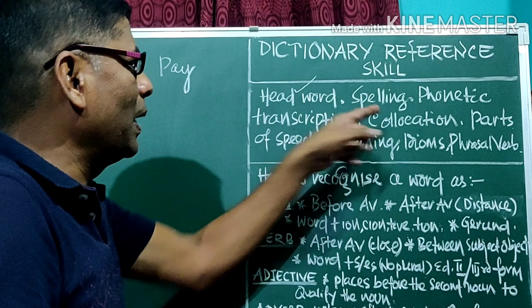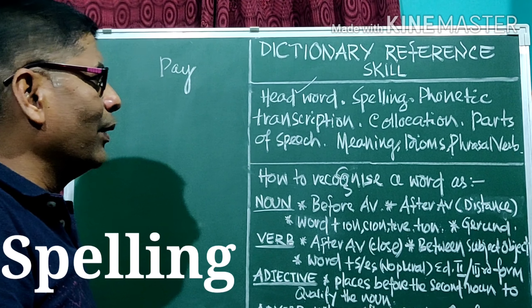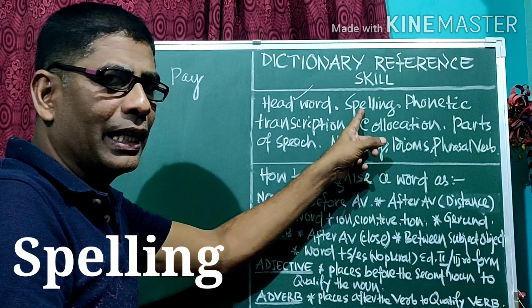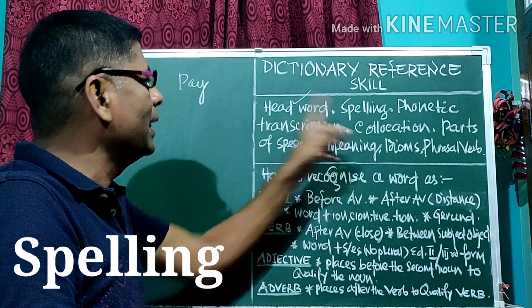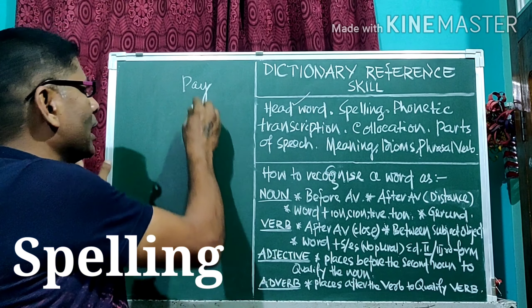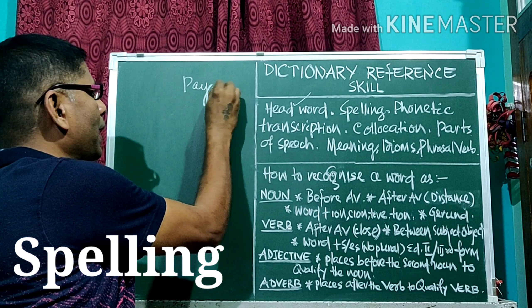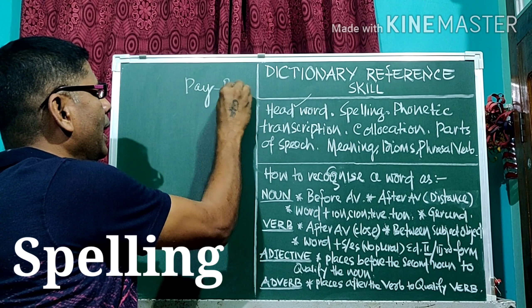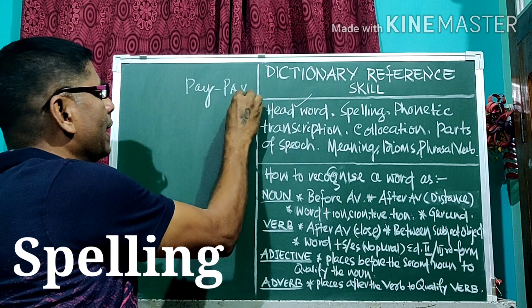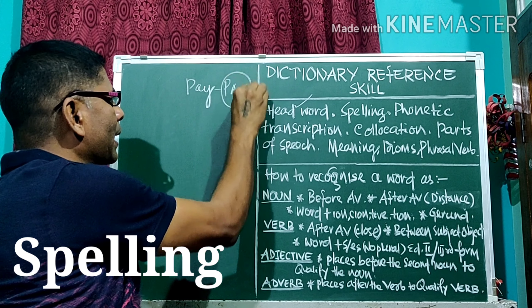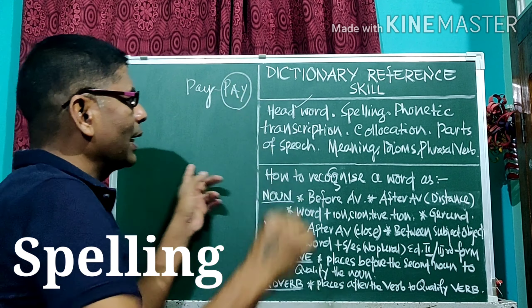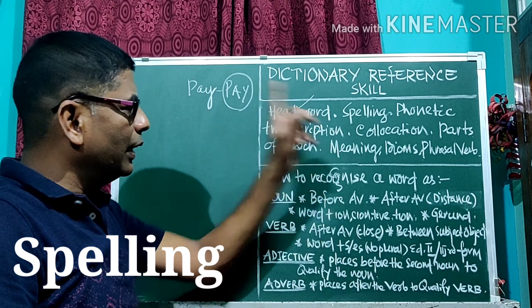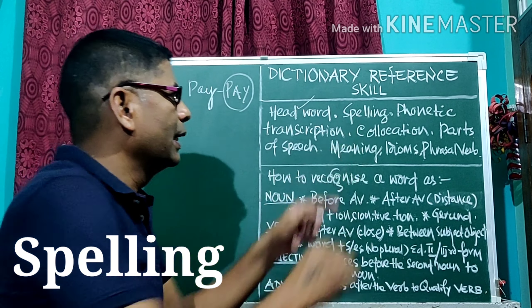Then, spelling. We can get the spelling in the dictionary. The spelling of 'pay' is P-A-Y. This is the spelling. We can get the spelling of all words in the dictionary.